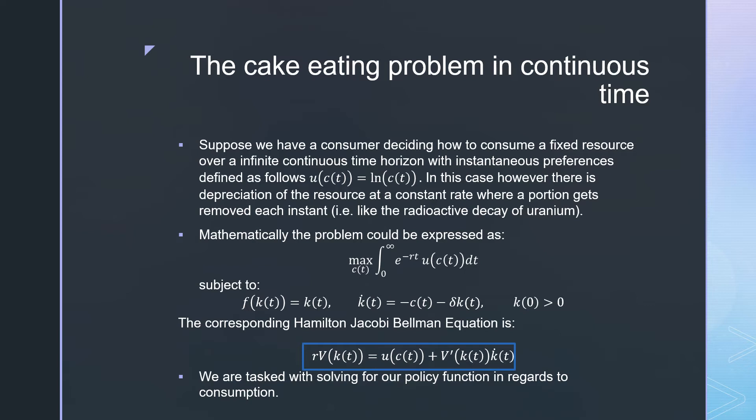The way our cake evolves over time is that there is going to be the portion consumed, which is our control variable, and there's also going to be a depreciation. The corresponding Hamilton-Jacobi-Bellman equation is just what we see right here. Like usual, we're going to be tasked with solving for our policy function with regards to consumption.